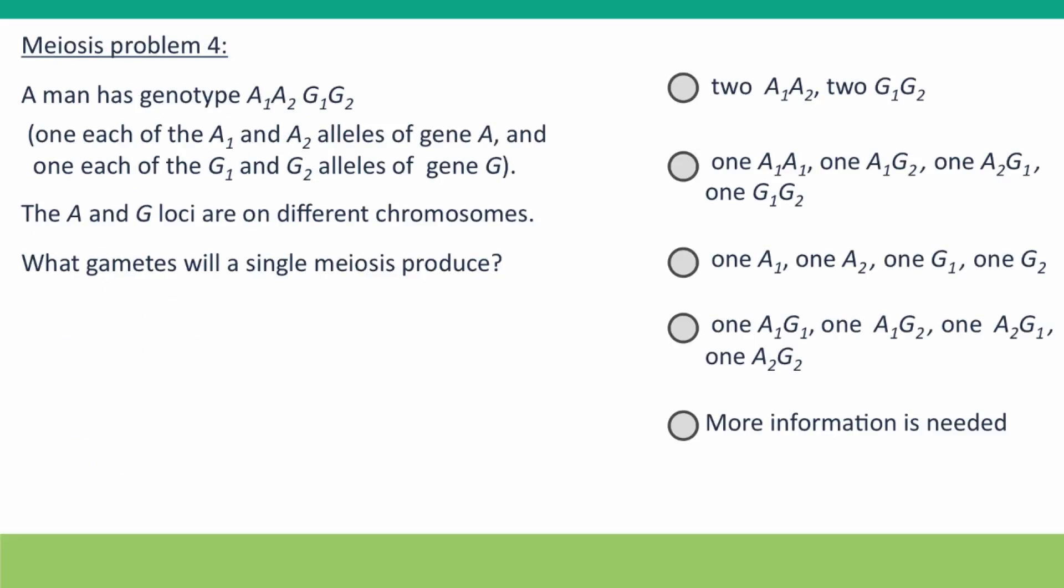In the next problem, things finally get a little more interesting. We're still considering two genes, but this time the man is heterozygous for both genes, gene A and gene G. They're on different chromosomes, so what gametes will a single meiosis produce? Here we go.